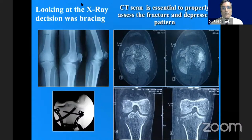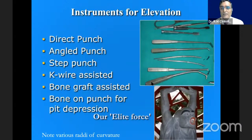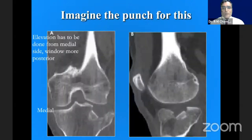Imagine the various punches required for various fractures. This fracture appeared quite innocuous on a routine x-ray, but imaging revealed the various types of fragment depression patterns — what we need to elevate and what we need to buttress. These various instruments should be available in our armamentarium. I like to emphasize the various angles of these punches — small and large — keeping fragments elevated and then locking them into position.